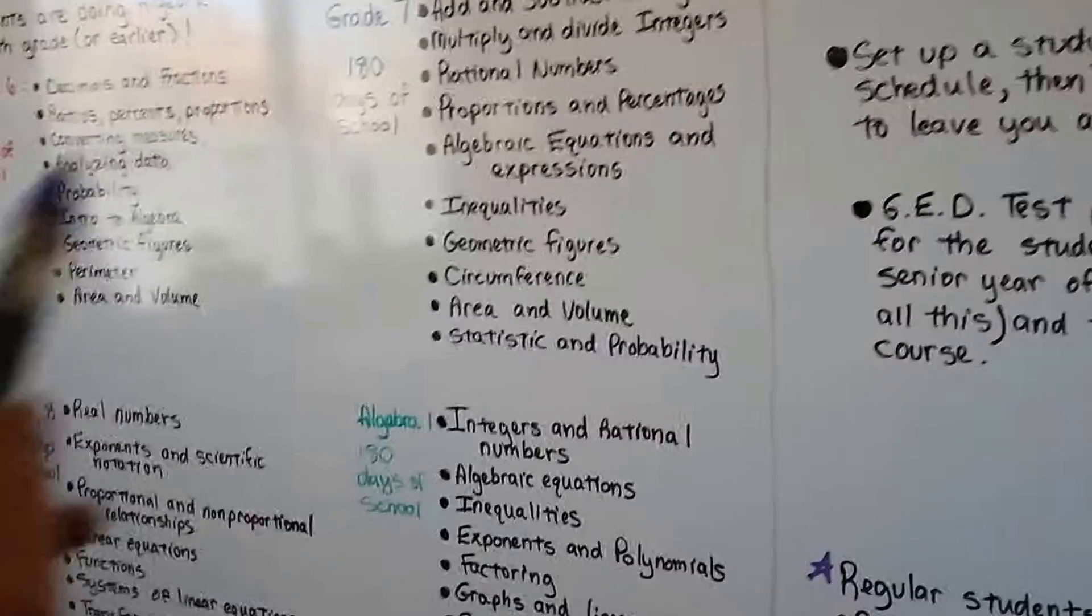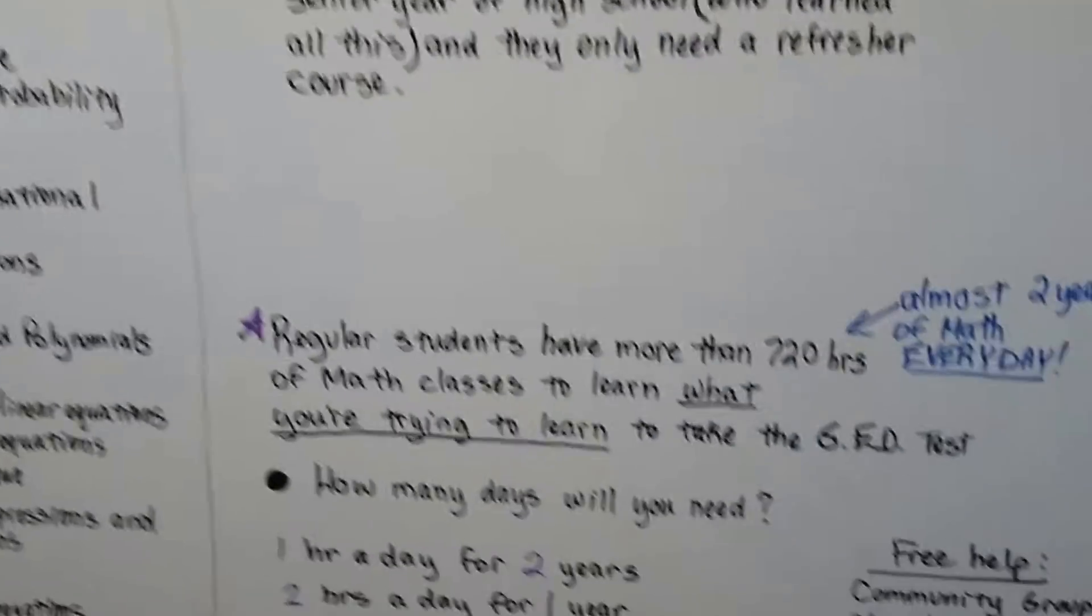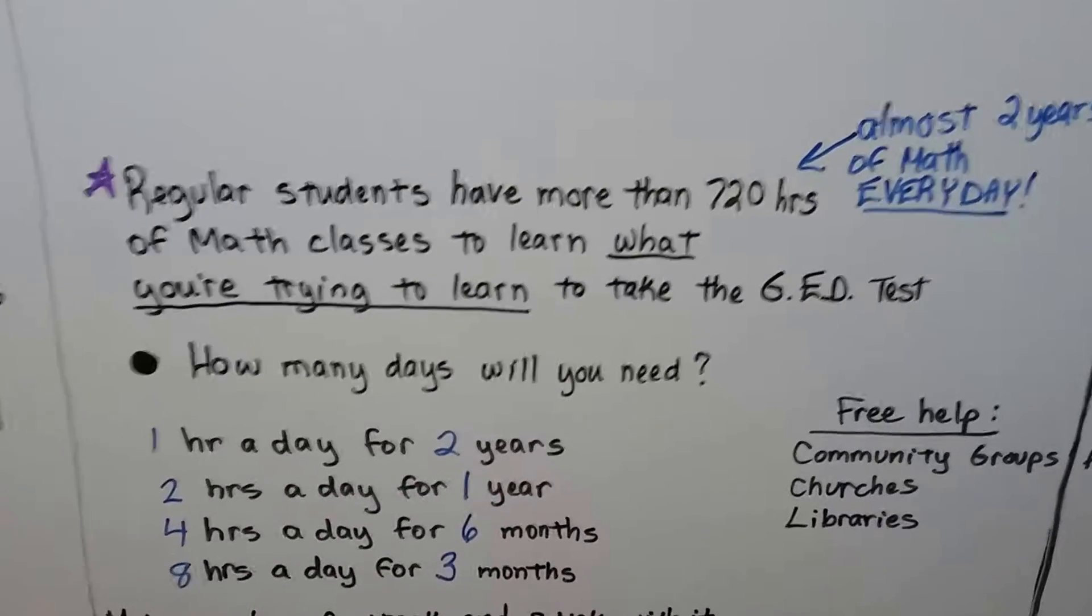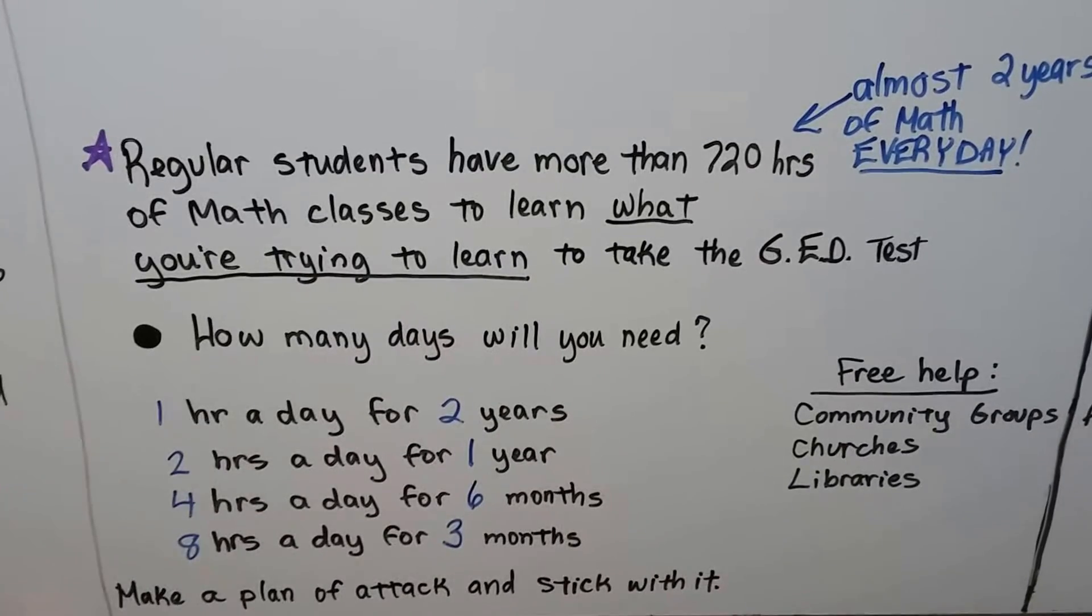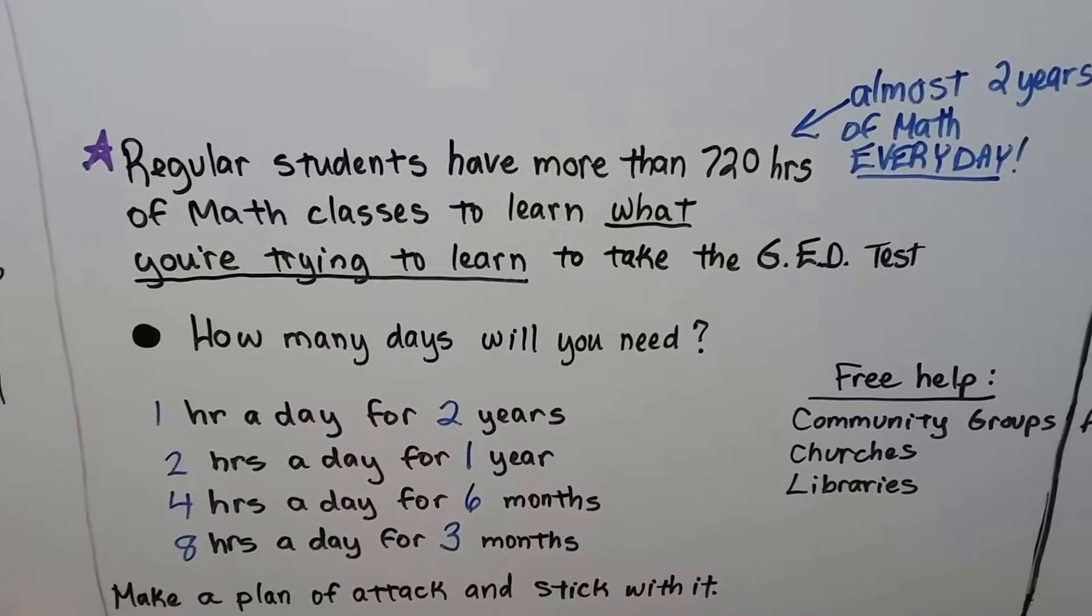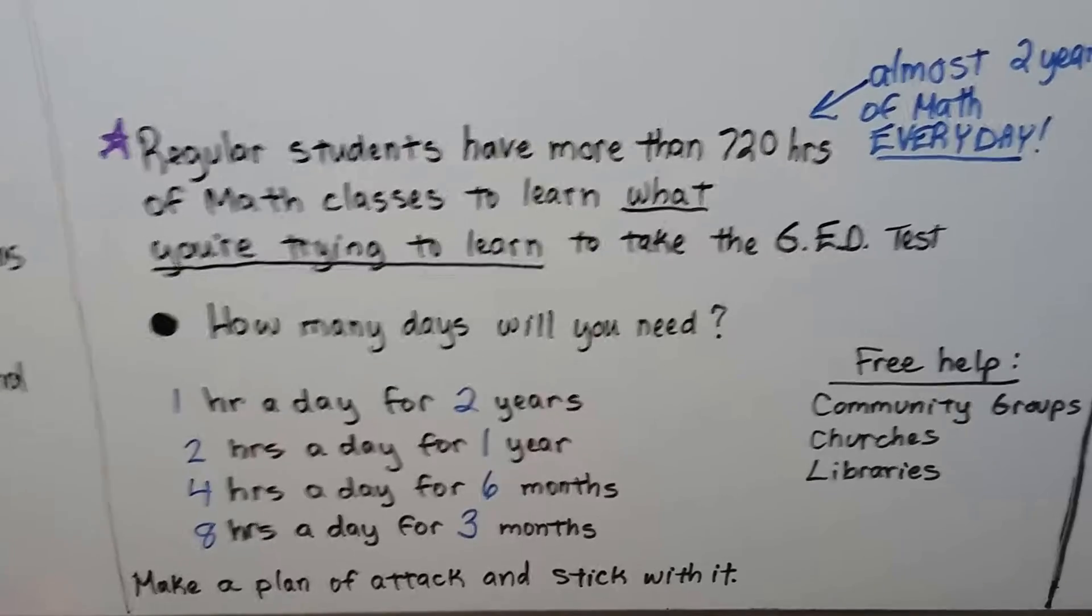So if you've never learned any of these, well, then it's going to take you a while. Regular students have more than 720 hours of math classes to learn what you're trying to learn to take the GED test. Isn't that a different perspective? That's almost two years of math every day for what you're going to try to learn in a few months.